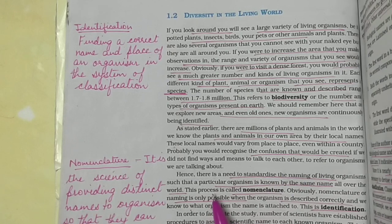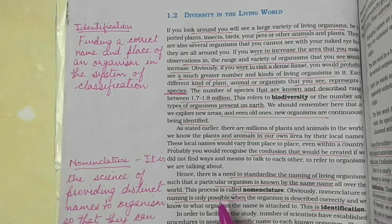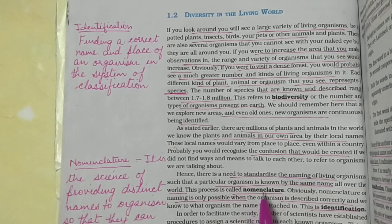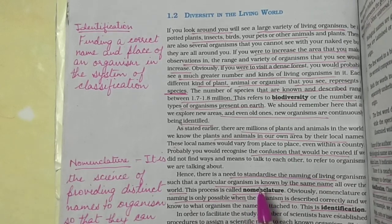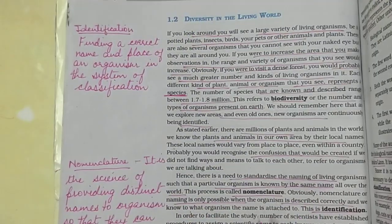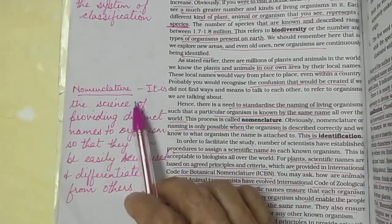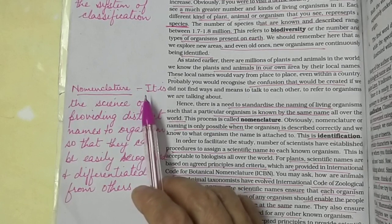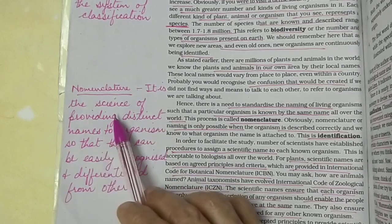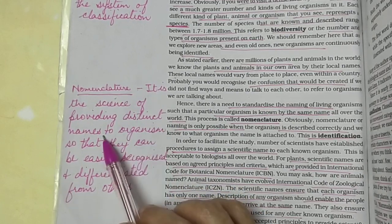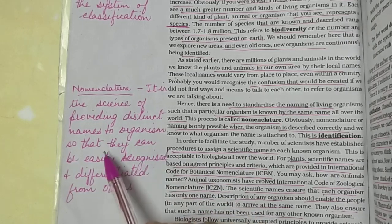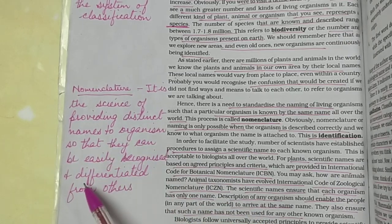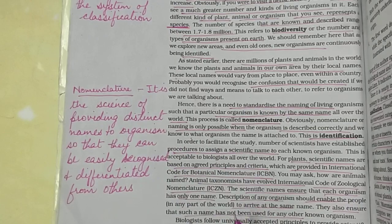To avoid this confusion, we need to standardize the naming of living organisms such that a particular organism is known by the same name all over the world. This process is known as nomenclature. Nomenclature is the science of providing distinct names to organisms so that they can be easily recognized and differentiated from others.